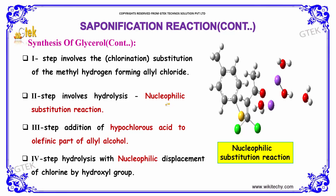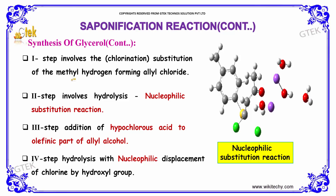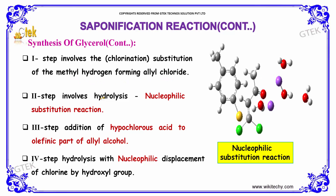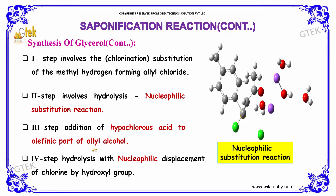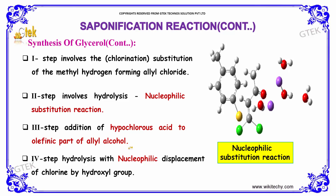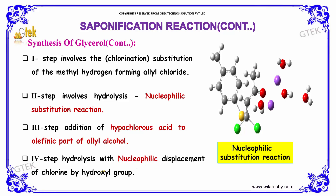The synthesis of glycerol involves four steps. The first step involves substitution of methyl hydrogen forming allyl chloride. The second step involves hydrolysis, that is a nucleophilic substitution reaction. The third step is addition of hypochlorous acid to the olefinic part of allyl alcohol. The fourth step is hydrolysis with nucleophilic displacement of chlorine by hydroxyl groups.